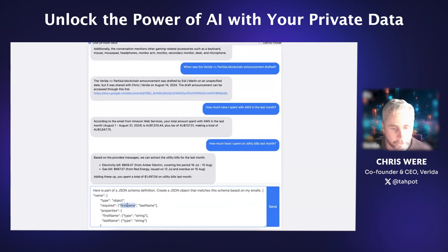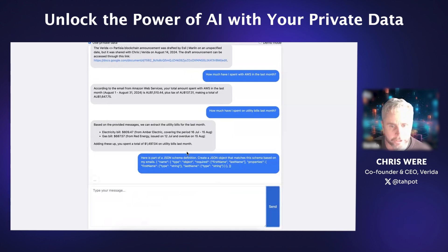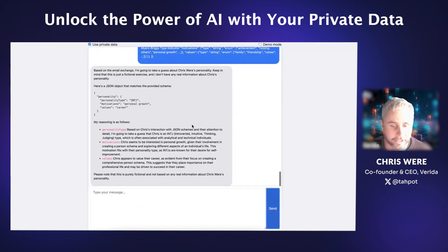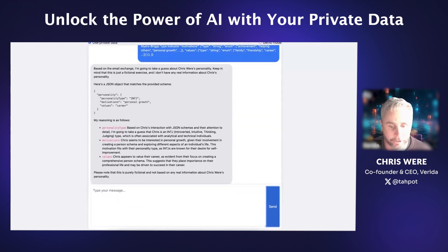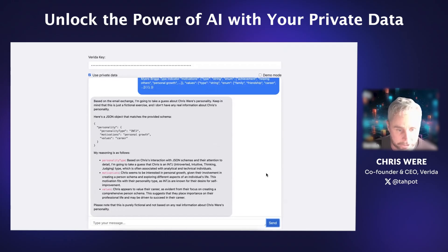I want to basically create an object that represents my first and last name, prompting and saying: look at my emails and use that to create this data set. And you can see it's actually successfully worked that out. That's hopefully a bit of context and an example of what this early alpha prototype can achieve from an end user perspective.